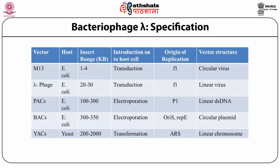In the present table, we can see different types of cloning vectors with their compatible host, insert size, origin of replication, and form of DNA. M13 vectors have E. coli as host and can accommodate 1 to 4 kb DNA. These are transduced, have F1 origin of replication, and are present in circular form in the host cell. Likewise, lambda phage, P1-derived artificial chromosomes, bacterial artificial chromosomes, and yeast artificial chromosomes show different features in the table.